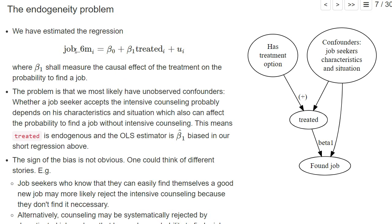As we have discussed in our OLS regression, where we regress whether the job seeker has found a job within six months on whether he actually got the intensive counseling, our OLS estimator beta 1 hat is most likely biased and inconsistent with respect to the true causal effect beta 1 because we have these confounders.